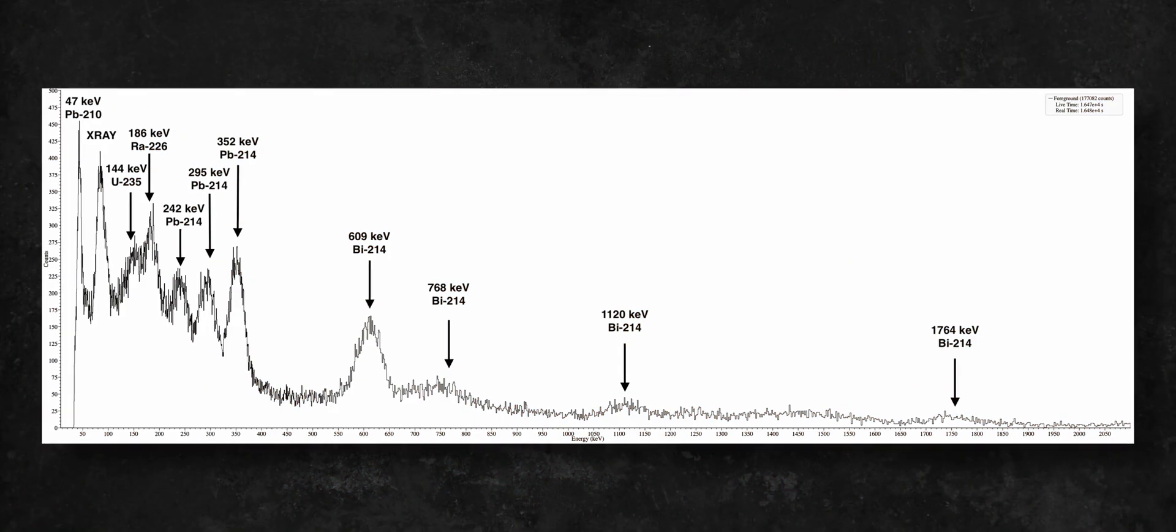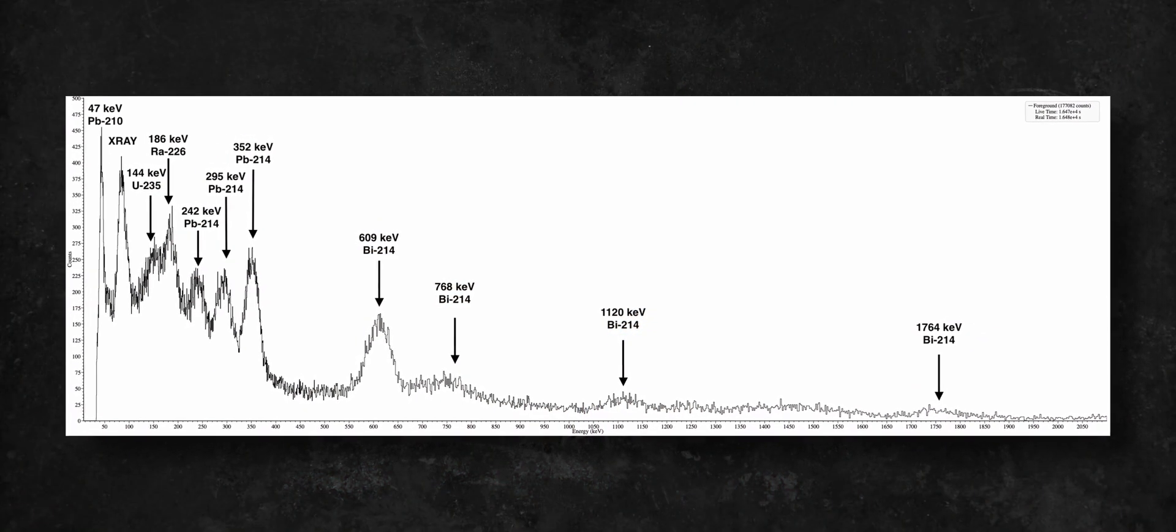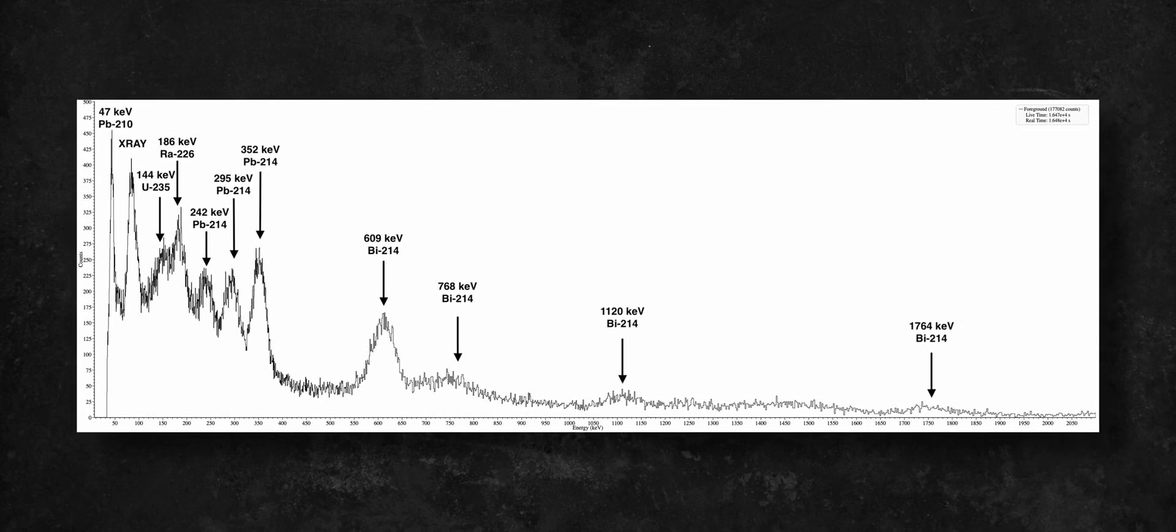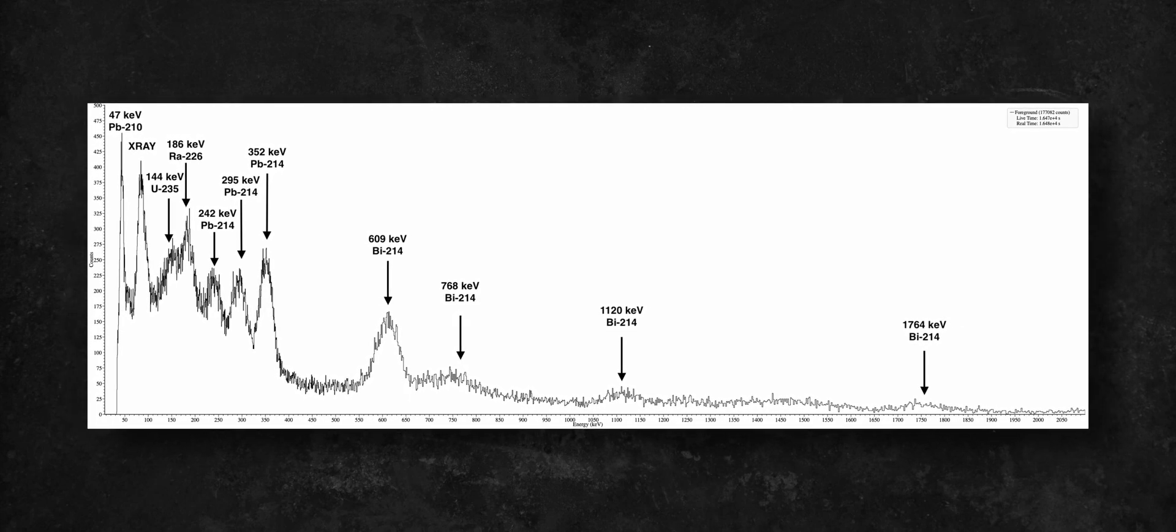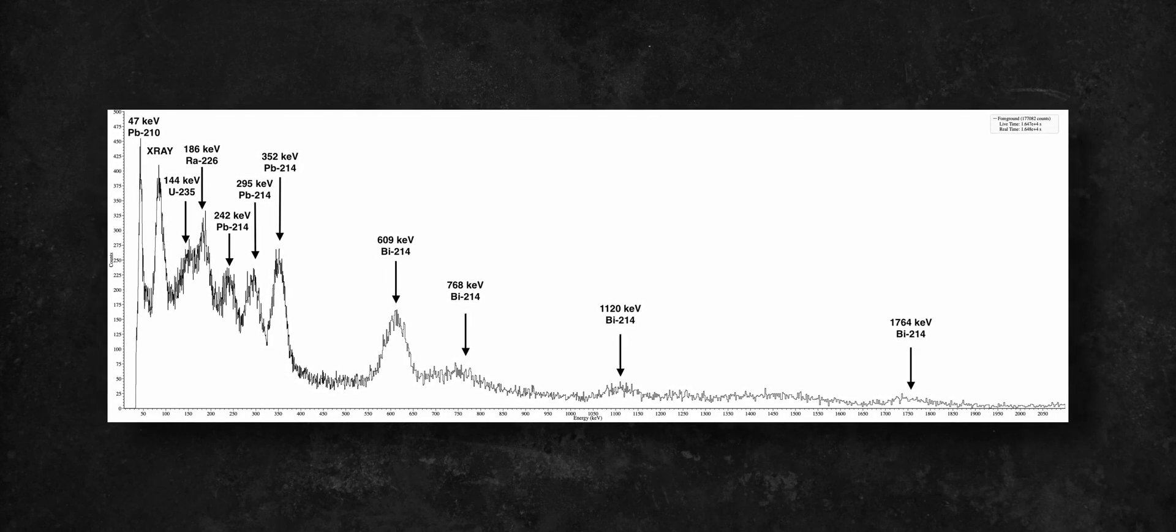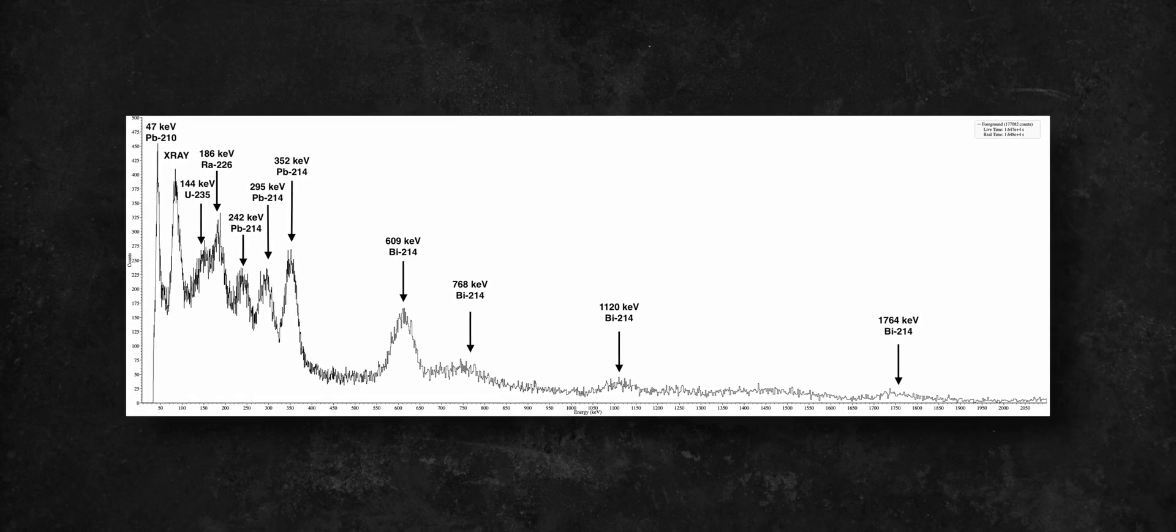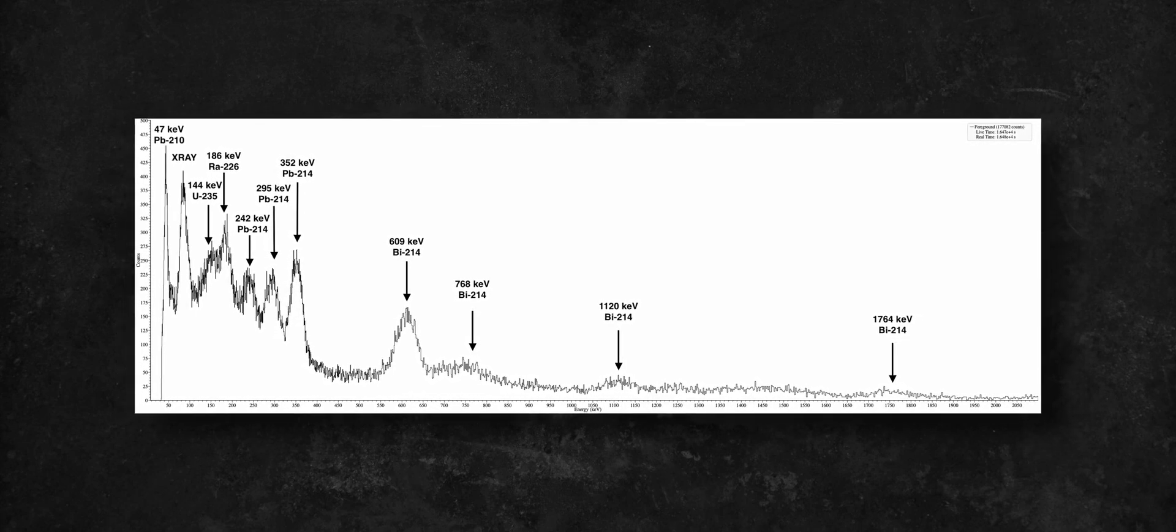A quick gamma spectroscopy of my radiobaryte mineral revealed an interesting gamma spectrum. I expected to see a clean radium-226 spectrum, but the peak at 144 keV indicates the presence of natural uranium. This is most likely due to the impurities that were picked up by the mineral during its formation in a uranium-rich environment.